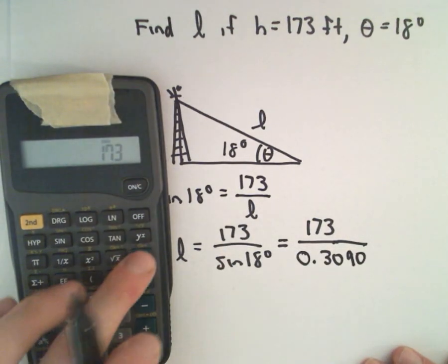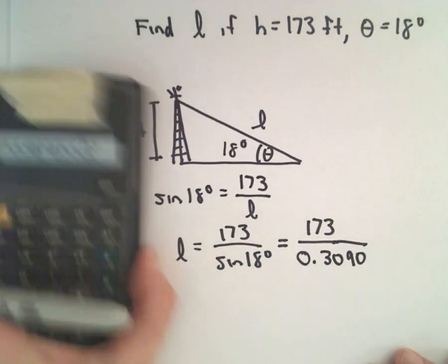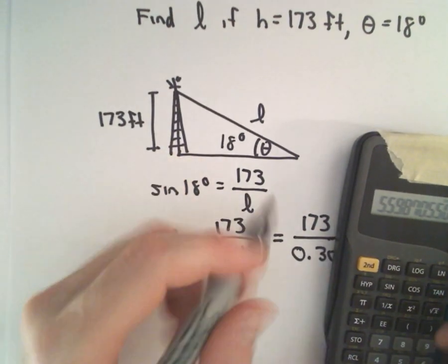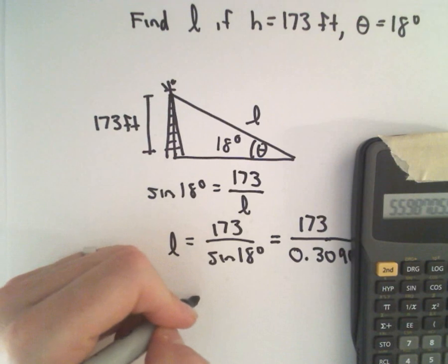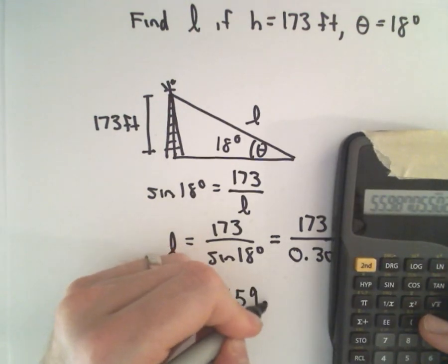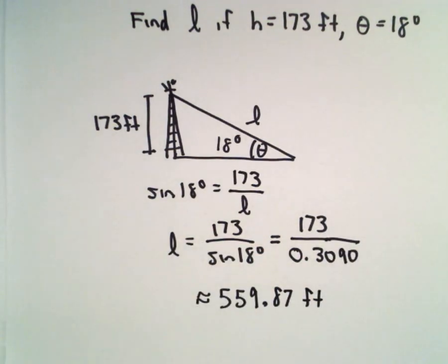So 173 divided by 0.3090. We're going to round this to the nearest tenth. Rounding that to the nearest tenth, I'm getting that to be roughly equal to 559.87 feet. So almost 560 feet would be the length of the guy wire.